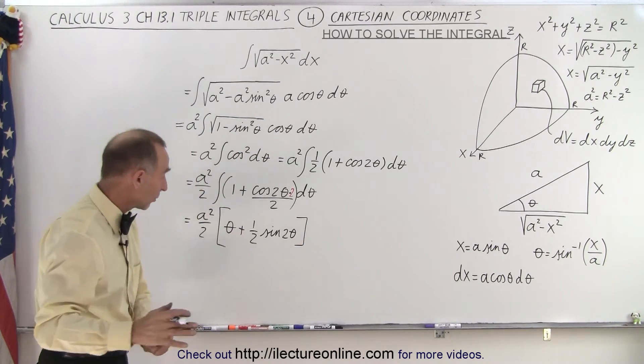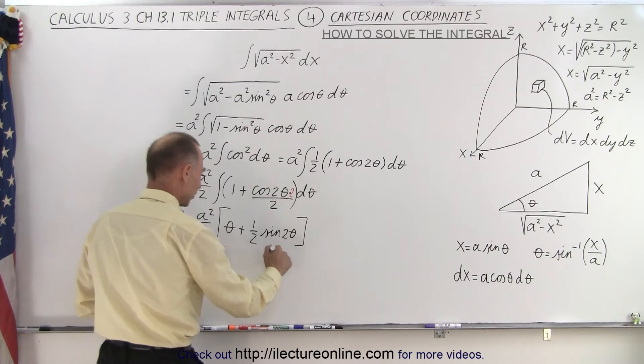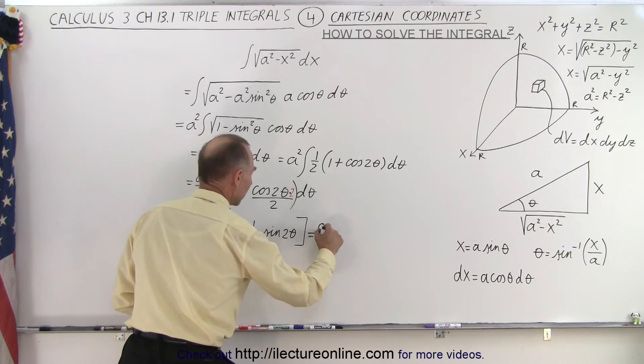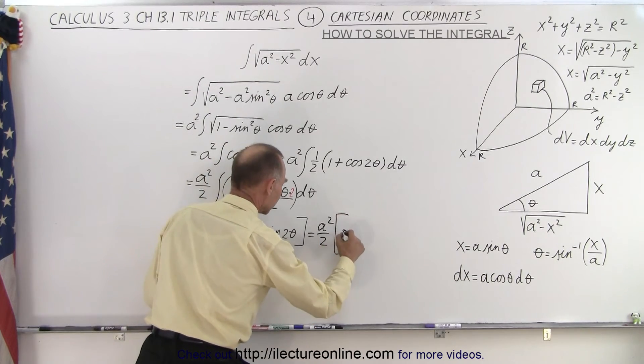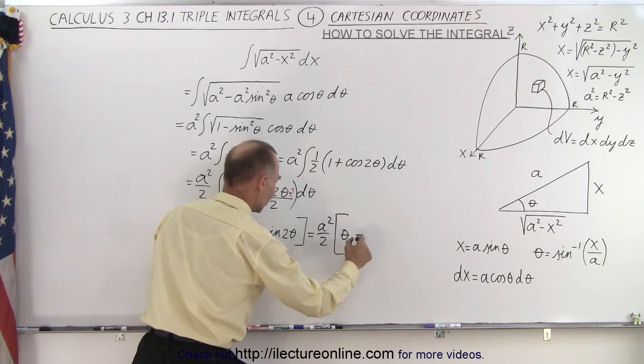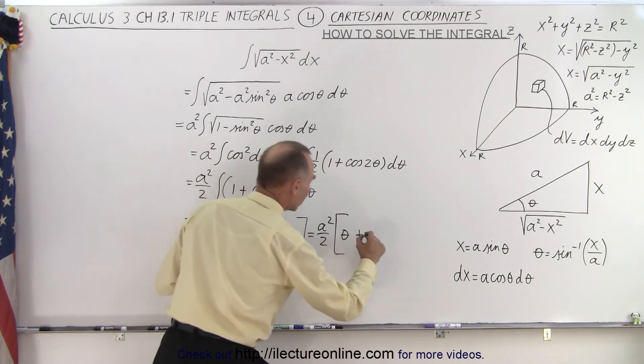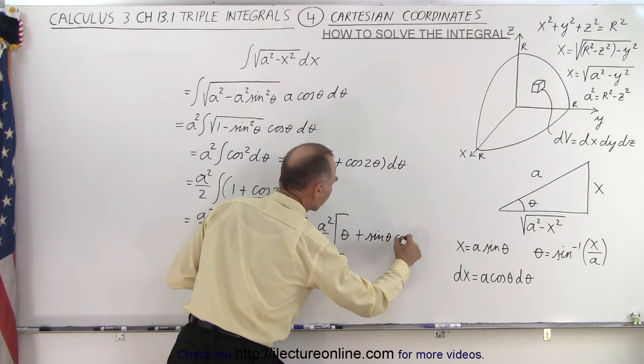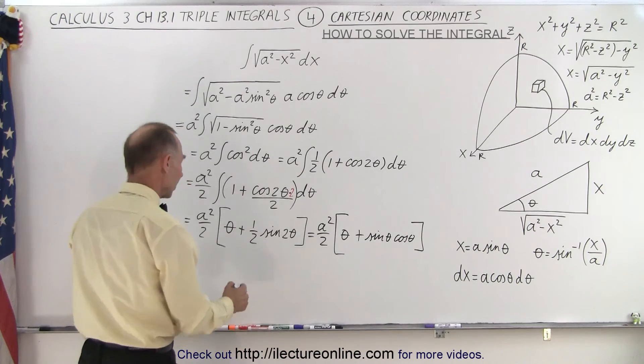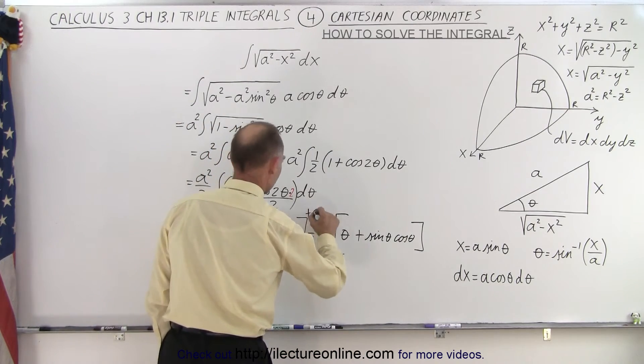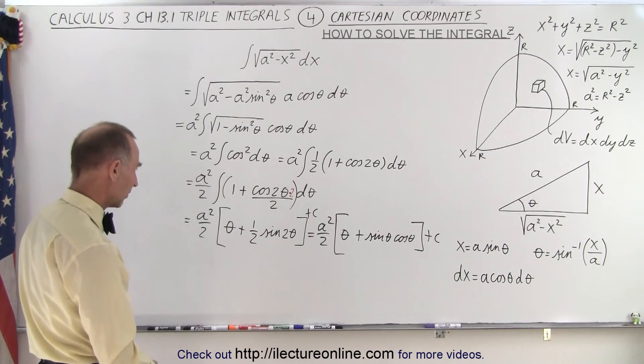And now we need to go ahead and substitute back. But before we do that, since we have a sine of 2 theta there, I can rewrite this as follows. So this would be equal to a squared over 2 times, here we have theta plus—1 half times the sine of 2 theta, that would be equal to the sine of theta times the cosine of theta, like this. Of course I have the plus constant of integration, so we probably want to go ahead and add that. Because if we don't have limits, we need a constant of integration.